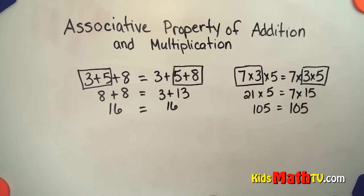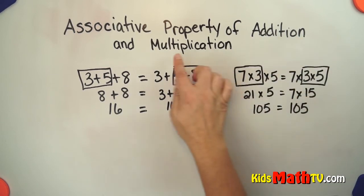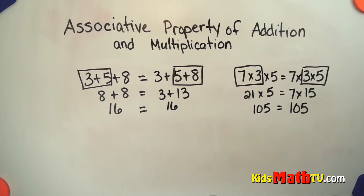So the associative property means that you can group numbers any way you would like as long as you're using all addition or all multiplication. And that's the end of the lesson on the associative property of addition and multiplication.